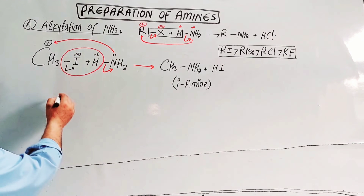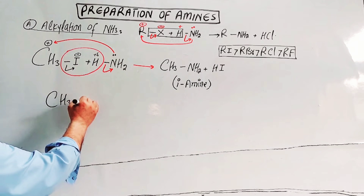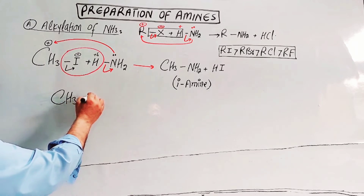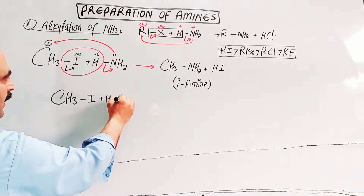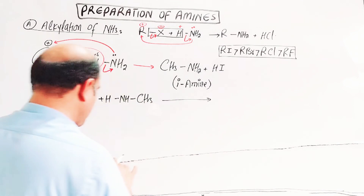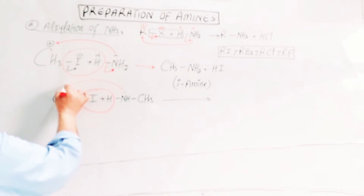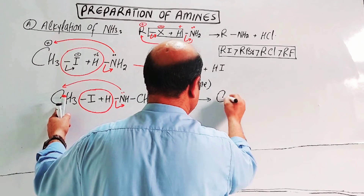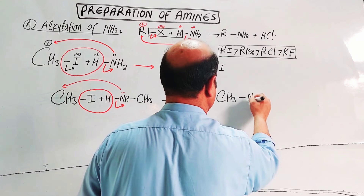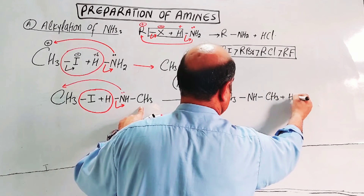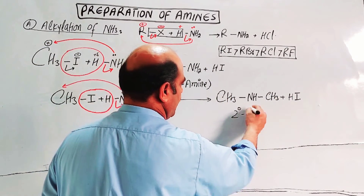In the second step, the primary amine CH3-NH2 reacts again with another alkyl halide (CH3I). The same mechanism is repeated: the lone pair of nitrogen attacks the alkyl carbon, iodide leaves as iodide ion, and hydrogen is removed as a hydrogen ion. The product is CH3-NH-CH3 (dimethylamine) plus HI. This is a secondary amine — a two-degree amine.